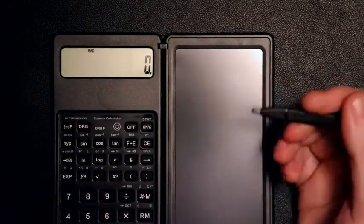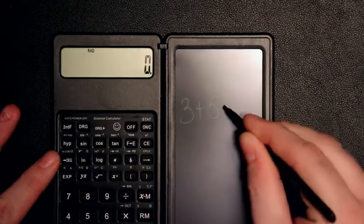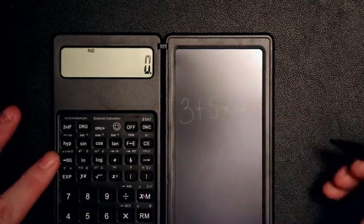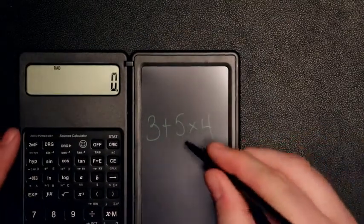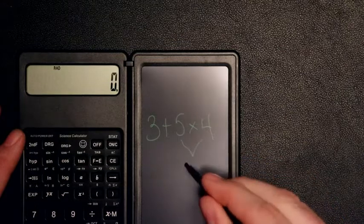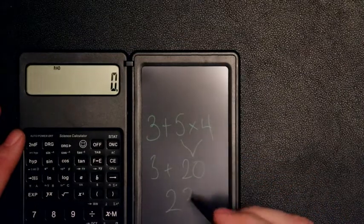I'm going to do a quick equation. How about 3 plus 5 times 4? If you follow the order of operations, you should be able to figure out pretty easily you do that first. 5 times 4 is 20, we bring down the rest, add it together, and we get 23.